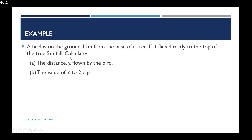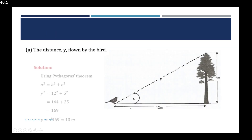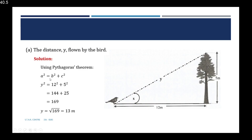Example 1: A bird is on the ground 12 meters from the base of a tree. If it flies directly to the top of a tree 5 meters tall, calculate part A — the distance y flown by the bird, and part B — the value of x to two decimal places. The distance y is the hypotenuse. The bird is 12 meters from the base and the tree is 5 meters tall. Since no angles are involved and we need to find a third side from two known sides of a right angle triangle, we use Pythagoras' theorem.